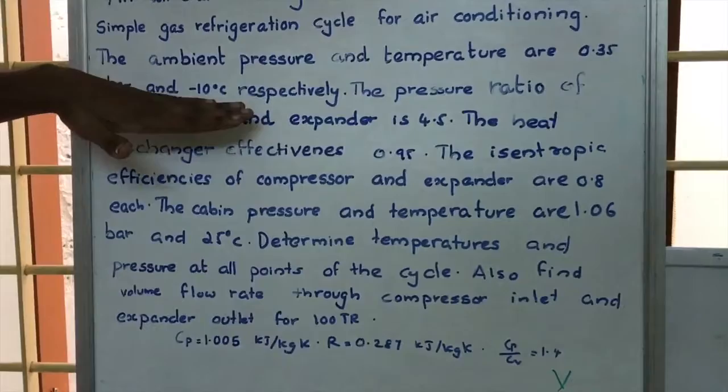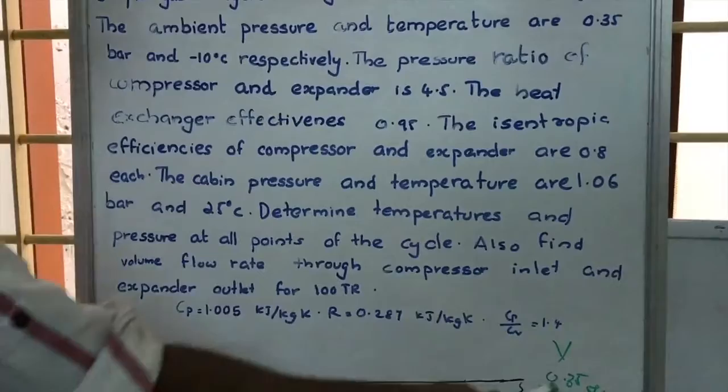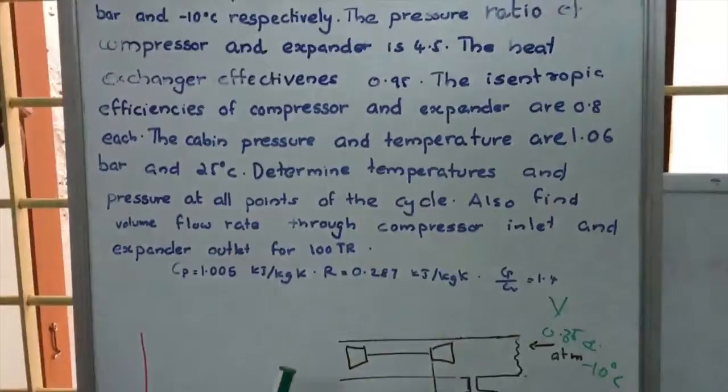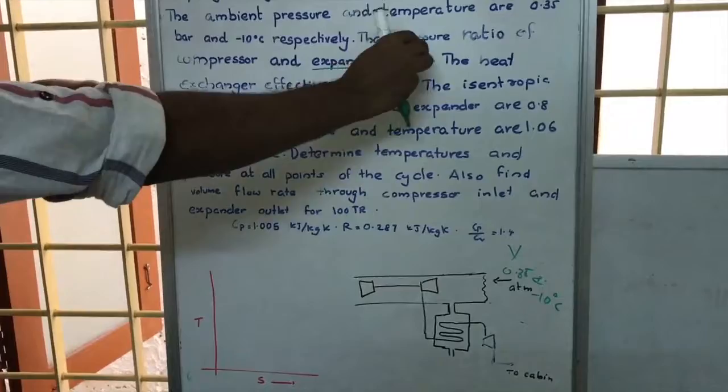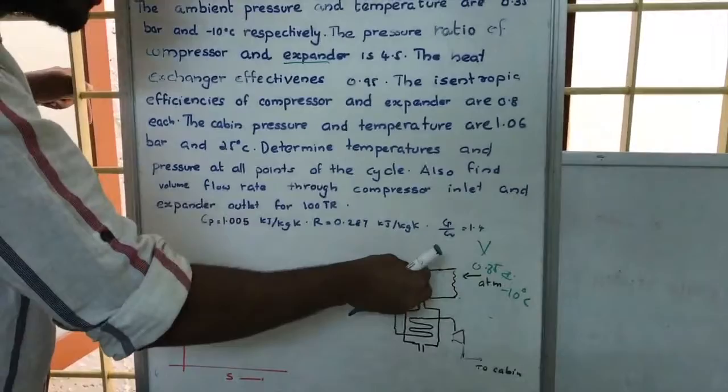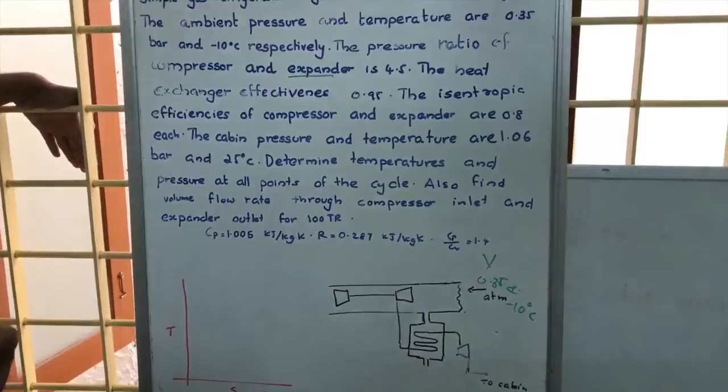The ambient pressure and temperature are 0.35 bar and minus 20°C respectively. After ramming, the air enters the compressor. In the compressor, the pressure ratio is 4.5, meaning when air passes through the compressor the pressure will be increased to 4.5 times.